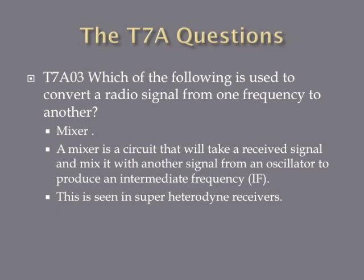Which of the following is used to convert a radio signal from one frequency to another? This circuit is called a mixer. A mixer takes a received signal and mixes it with another signal from an oscillator to produce an intermediate frequency — a third signal. It takes the incoming signal from the antenna, combines it with an oscillator's signal, and they produce a third signal that the receiver processes to produce audio. These are seen in superheterodyne receivers.